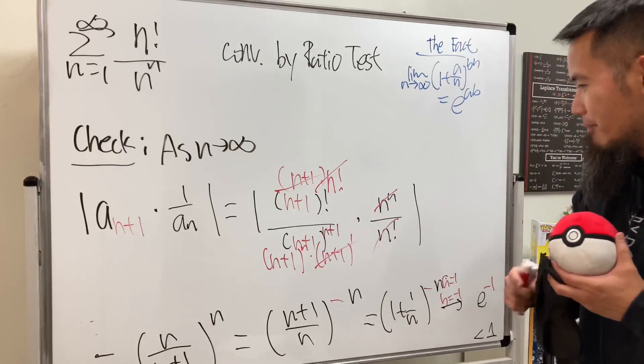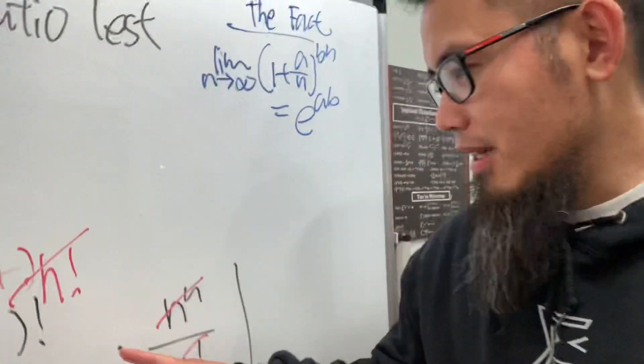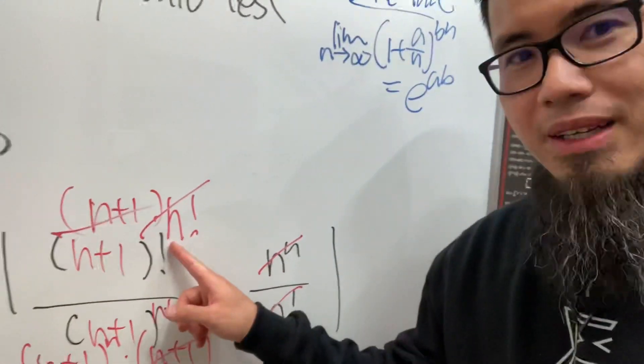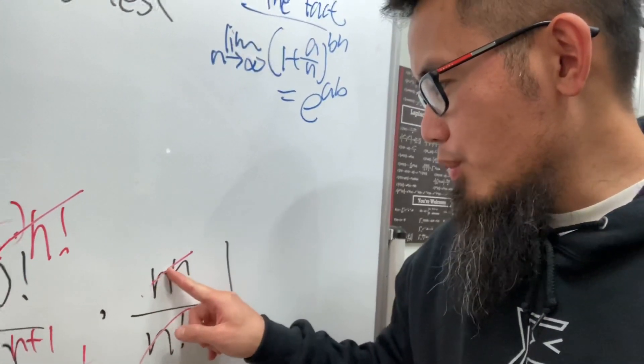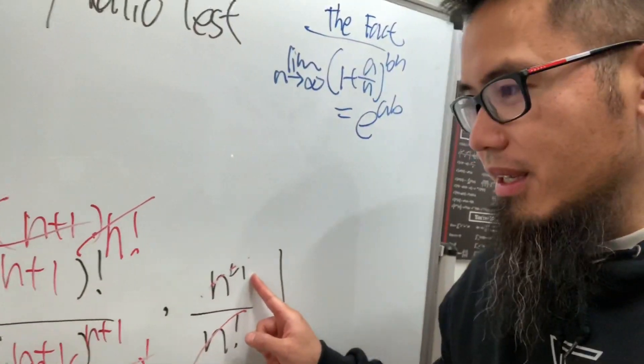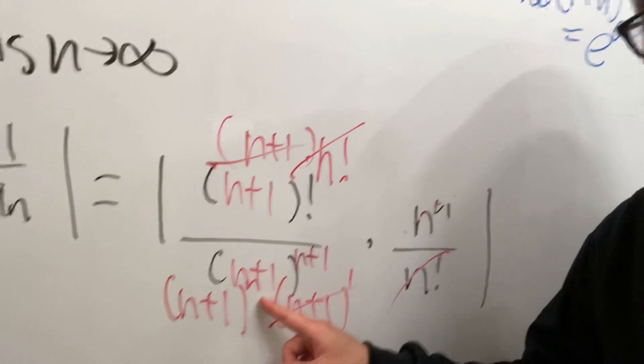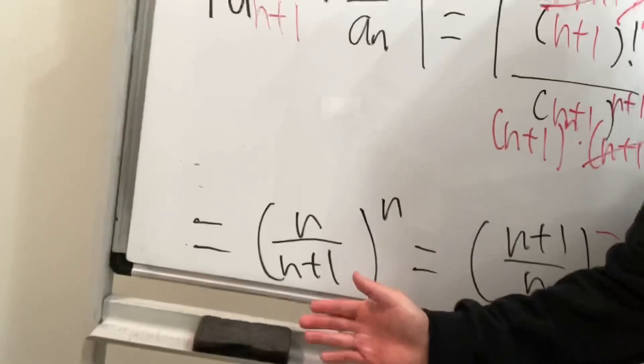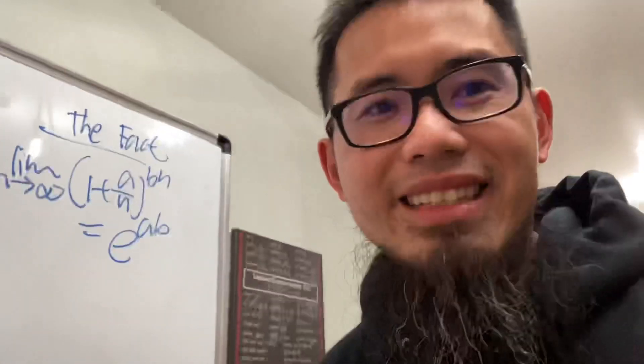I'm supposed to cancel this with that, right? So this right here stays. Okay, so that's why you have the n to the n over (n+1) to the n power right here. Okay, and then that's how we get this guy right here, and then so on.